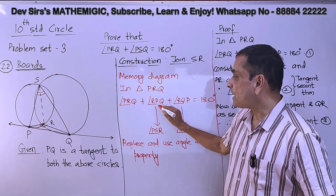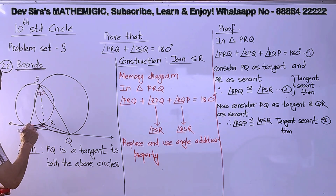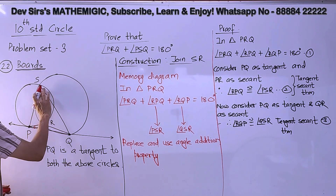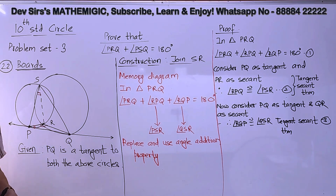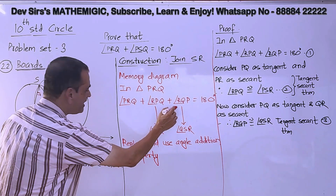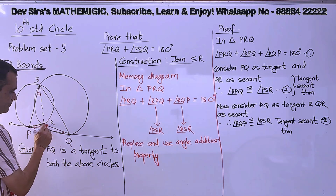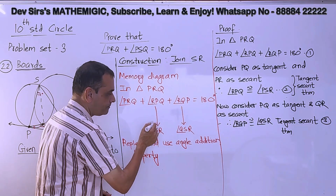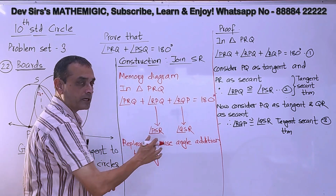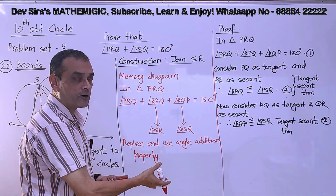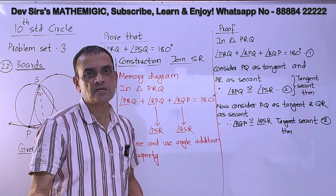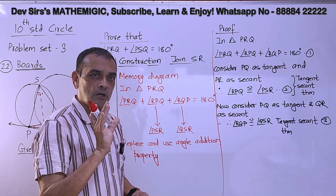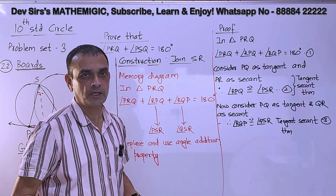Let's go to the main diagram. Angle RPQ will be shown equal to angle PSR. How to show them congruent? Consider PQ as tangent and PR as secant. We know the angle formed by the tangent and secant is congruent to the inscribed angle on the opposite side of the secant — that is angle RPQ is congruent to angle PSR. You join the endpoints of the chord and that inscribed angle is congruent to angle RPQ. This is tangent secant theorem part 2. Memory diagram helps us reduce the steps and make it easier.